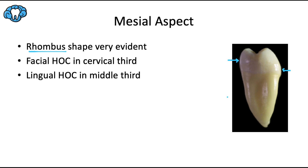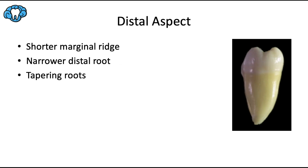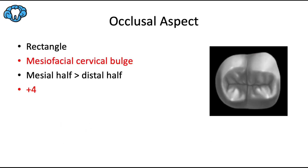Proof of the rhomboid skew: the mesiofacial cusp tip we can see here is almost perfectly in line with the root apex, again thanks to the skew. For the distal aspect, there are the same things you're used to seeing — the shorter marginal ridge, the flatter cervical line, and like the first molar the distal root is a bit narrower than the mesial root. One slight difference is that the roots taper a lot more drastically than they did in the mandibular first molar.